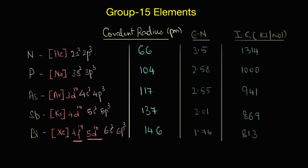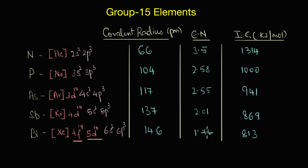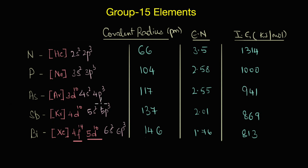Similarly, if you look at electronegativity and ionization enthalpy values, both decrease as we go down the group, but again the decrease is not very large in the heavier members. That covers the atomic properties — atomic radius, electronegativity, ionization enthalpy, and so on.